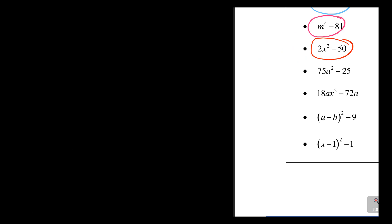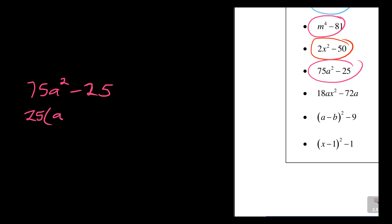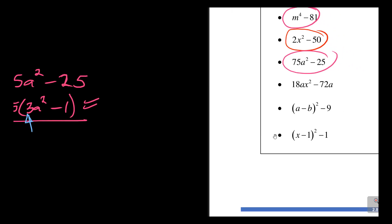Next: 75a squared minus 25. Suspect difference of two squares, but 75 is not a perfect square. Taking out 25 gives 25 times 3a squared minus 1. Since 3 is not a perfect square, this cannot be factorized further as a difference of two squares. So the factorized answer is 25 times the quantity 3a squared minus 1.